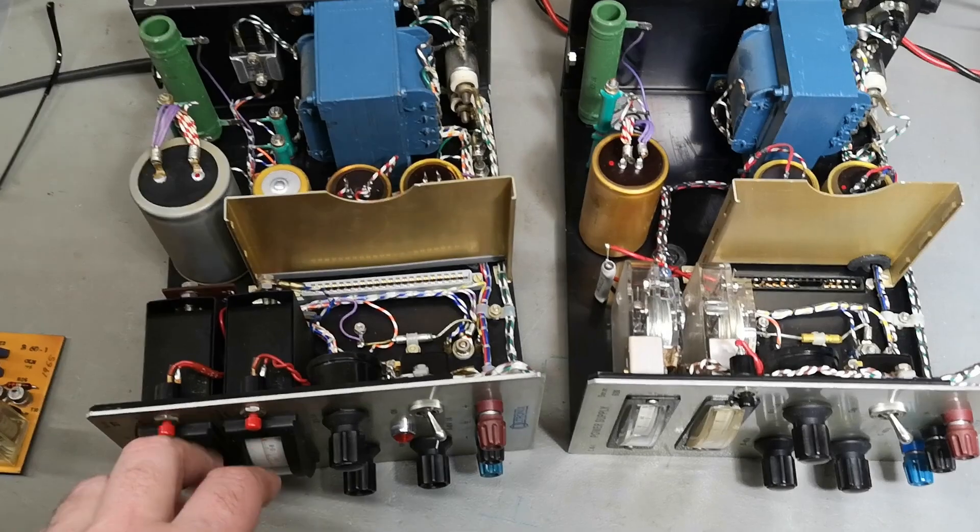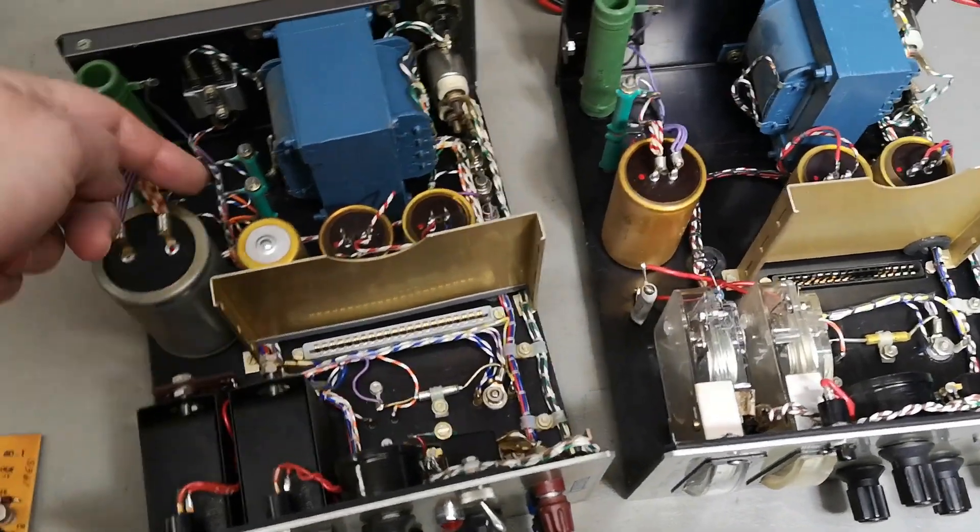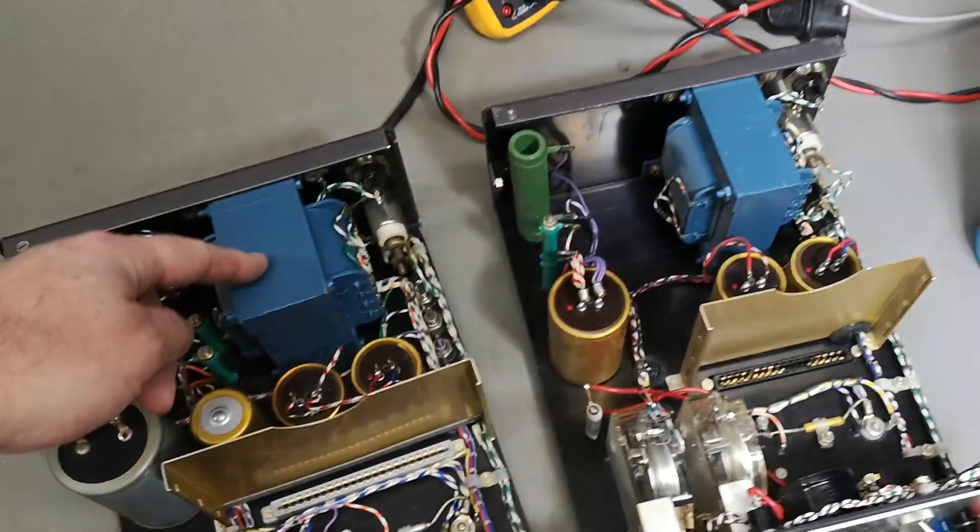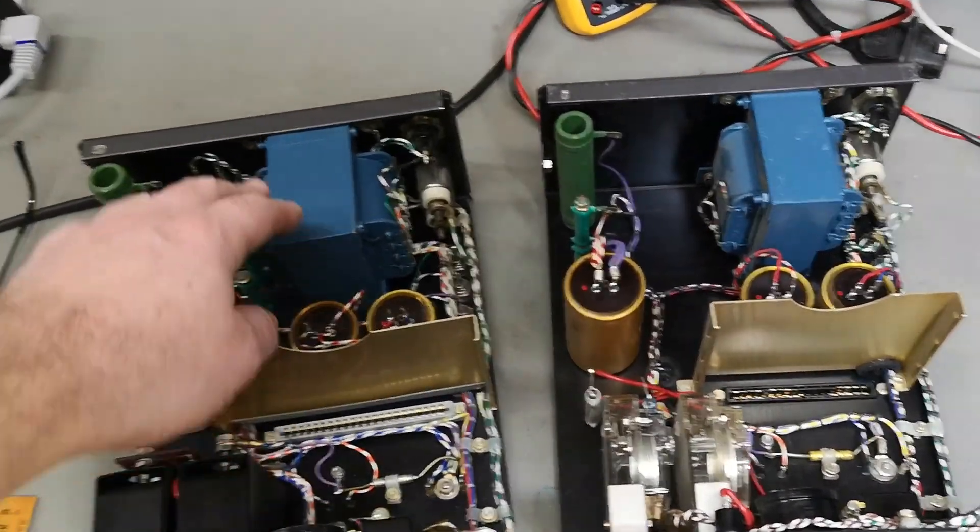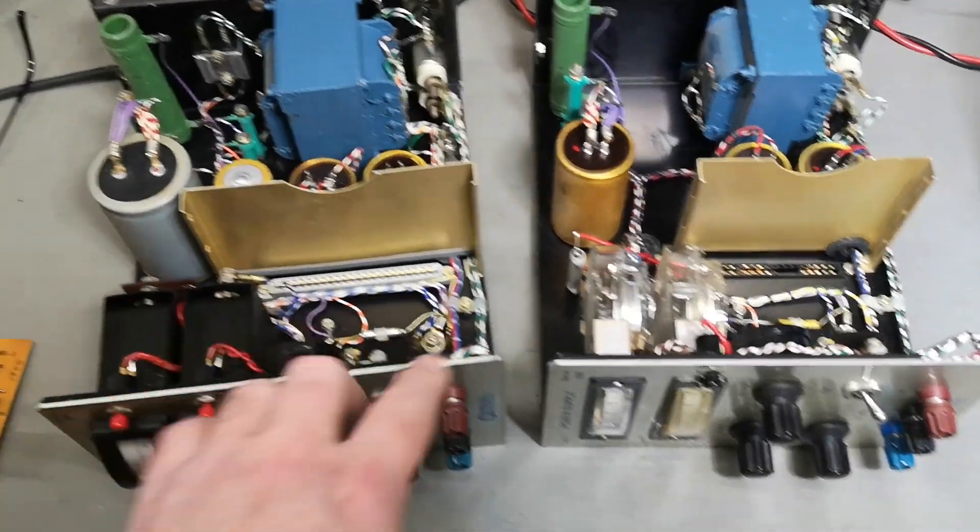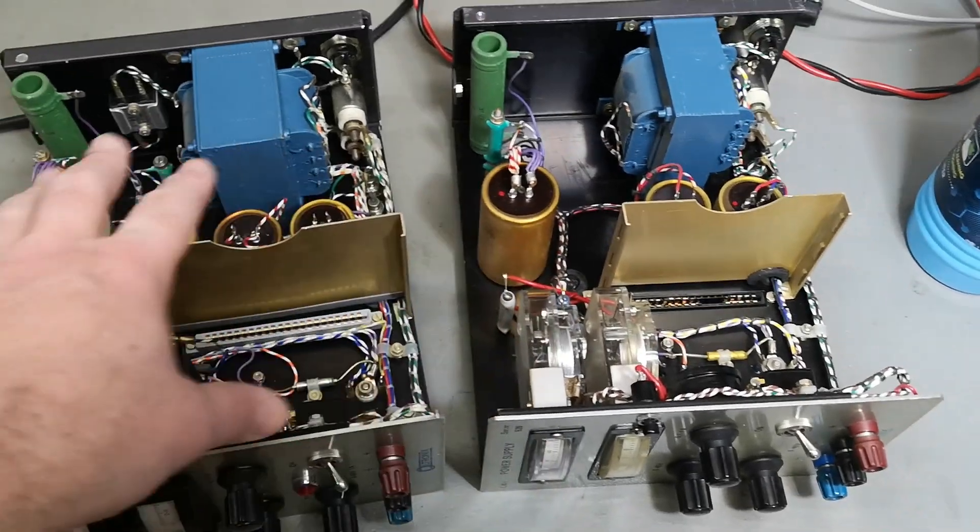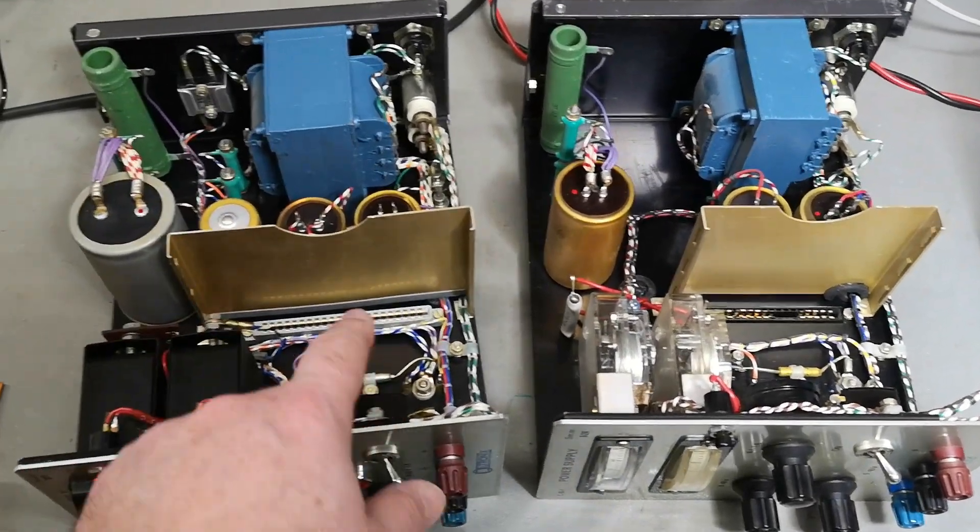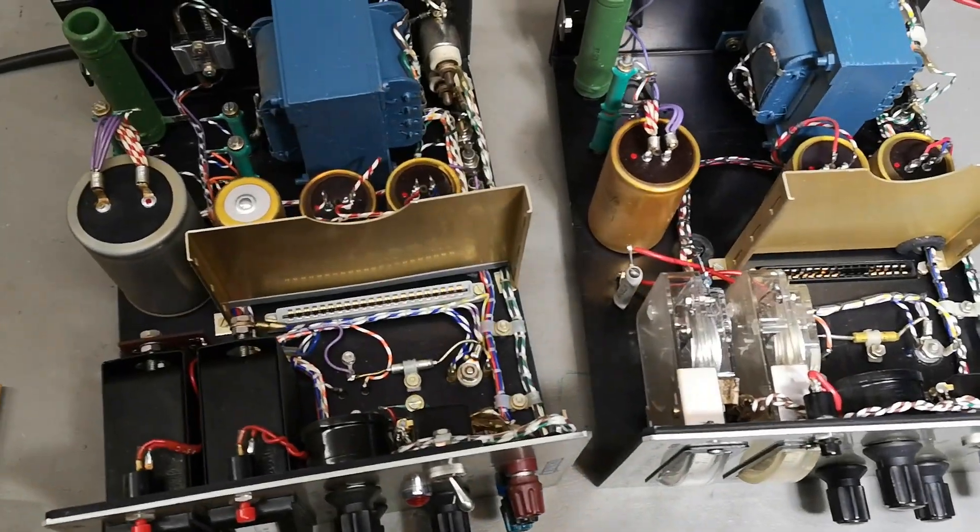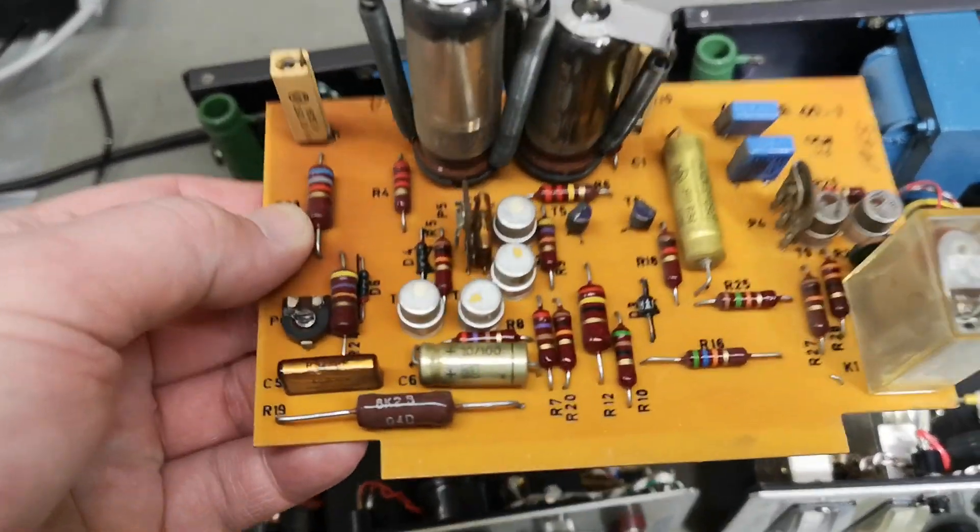Everything here is bigger and more heavy: the meters, the capacitor, more capacitors, even the transformer is bigger. But of course 60 volts one amp versus 40 volts one amp, so yeah it should be bigger. But it is also made a lot differently. Look at that PCB.